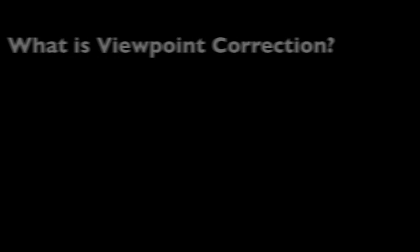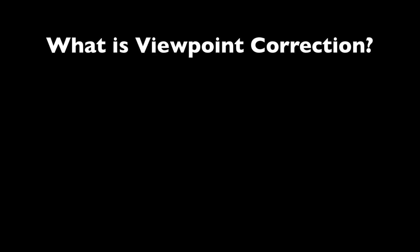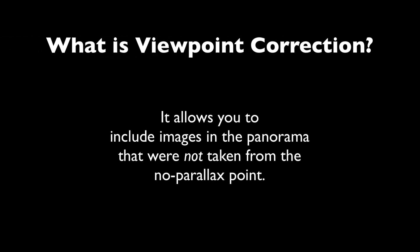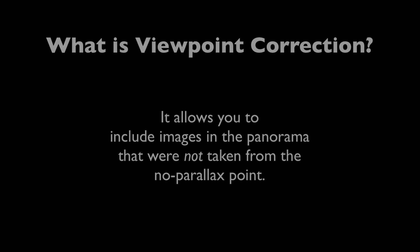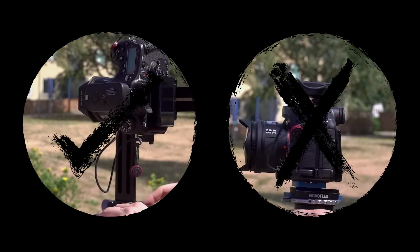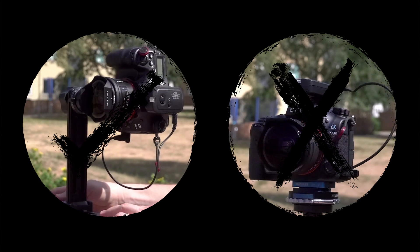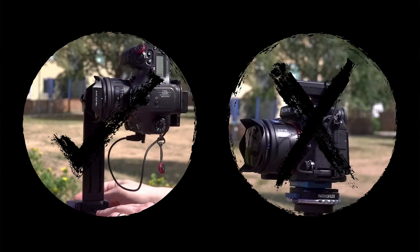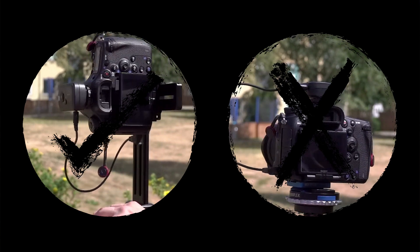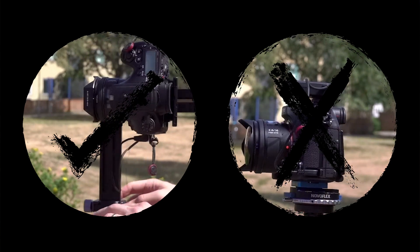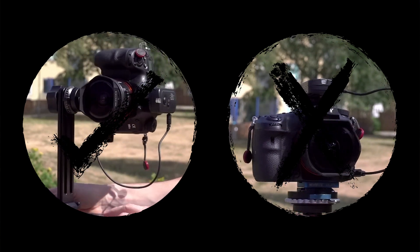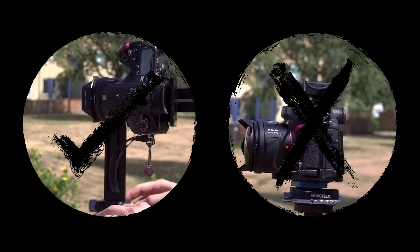So what is Viewpoint Correction? Essentially, Viewpoint Correction helps you to map images into your existing panorama that were not taken from the No Parallax point. You remember from the first tutorial that we go to great lengths to capture all our images from the No Parallax point — rotating the camera not around the camera body but around the lens and the No Parallax point of the lens.